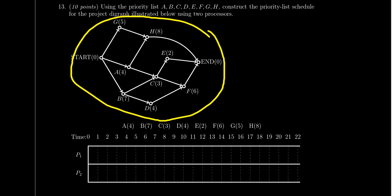So we have task A, B, C, D, E, F, G, H, and that actually is going to be our priority list for this project here. We're just going to do alphabetical order.